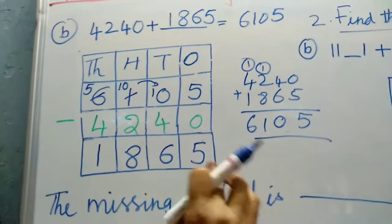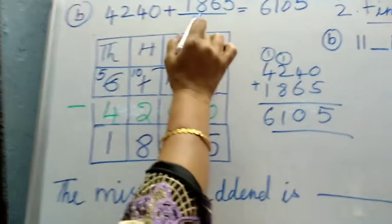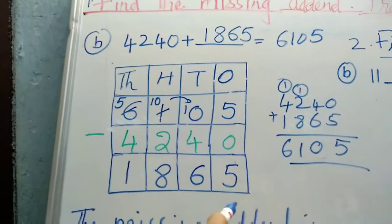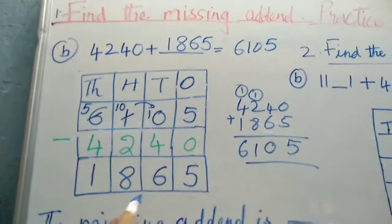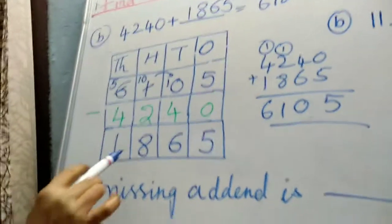That means our sum is correct. Now see, they have not given one addend. How to find out the second addend? Put the sum first. From the sum, subtract the first addend. You will get the second addend. You have to write it here. This is how you have to do. Same like this only.